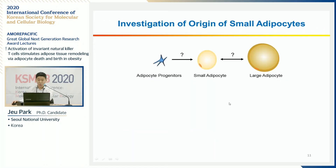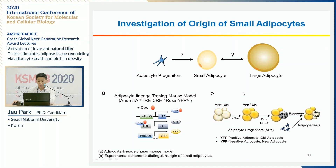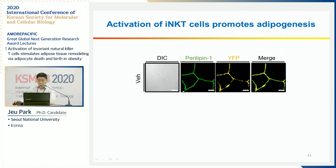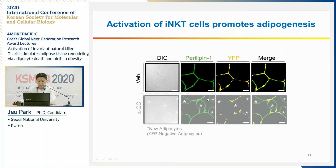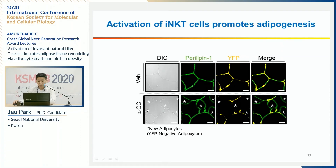To distinguish the origin of the small adipocytes — whether from adipocyte progenitors or pre-existing mature adipocytes — we used an adipocyte lineage tracing mouse model, where mature adipocytes are labeled with YFP in a doxycycline-dependent manner. YFP-positive adipocytes are old adipocytes and YFP-negative adipocytes are new adipocytes. Mature adipocytes were successfully stained with YFP, and in the alpha-GC injection group, YFP-negative adipocytes were generated, indicating that small adipocytes after iNKT cell-induced adipocyte death are at least partly derived from adipogenesis.